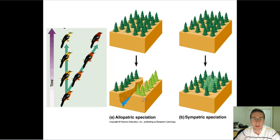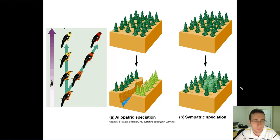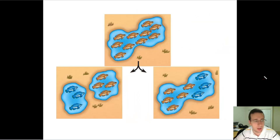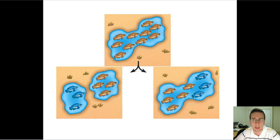So let's talk about how each one of these works, and then some other kinds of speciation, and then how it all gets put together to create different species. So here you see again the concepts of allopatric and sympatric speciation. Can you tell which one is which? We just talked about it.